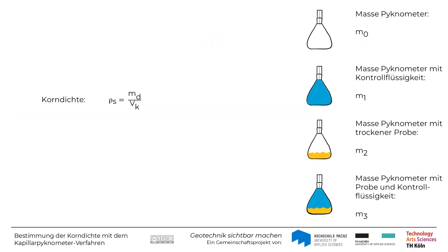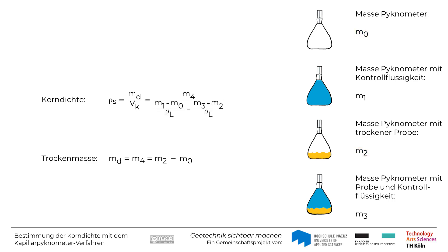Um die Korndichte Rho-S der Bodenprobe zu bestimmen, muss die Trockenmasse Md der Bodenprobe ins Verhältnis zu dem Volumen der Bodenpartikel Vk gesetzt werden. Die Trockenmasse Md im Zähler entspricht hierbei der Masse M4, die aus M2 minus M0 bestimmt werden kann. Das Volumen der Körner Vk ergibt sich aus den beiden Termen im Nenner der Formel.